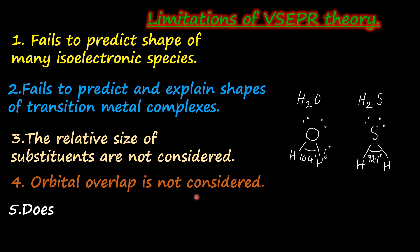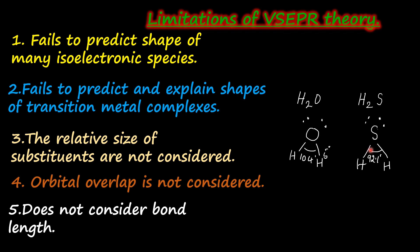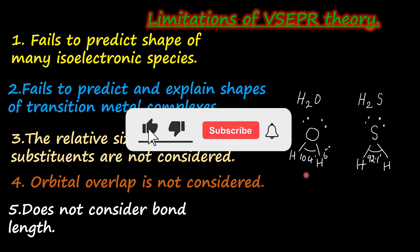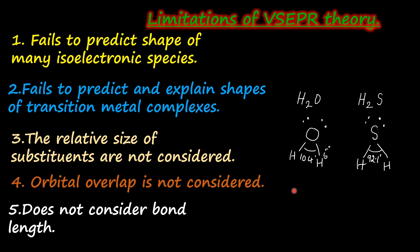One more limitation is that VSEPR theory does not consider bond length. As the size of the constituent atoms changes, bond length also will change, and that will also affect the shape of the molecule. So the geometry of the molecule cannot be fully explained by VSEPR theory. Since this theory has limitations, we have to consider the next theory which was put forward to overcome the defects of VSEPR theory.